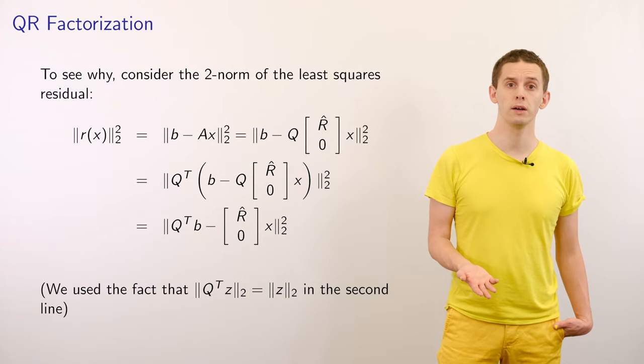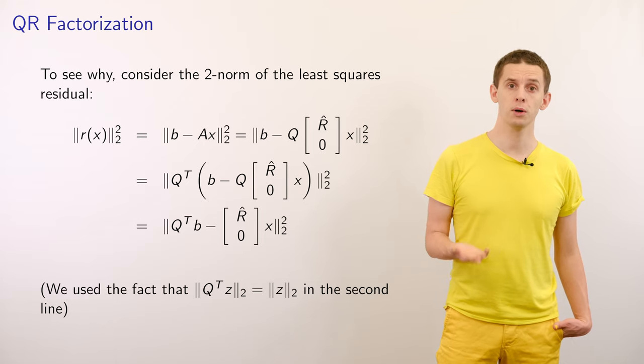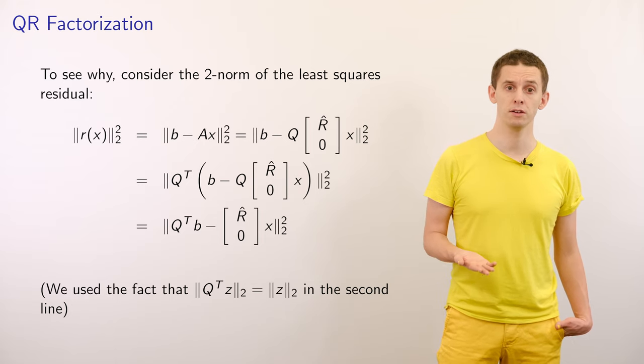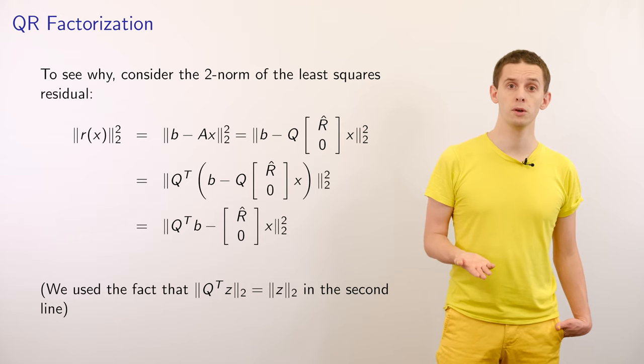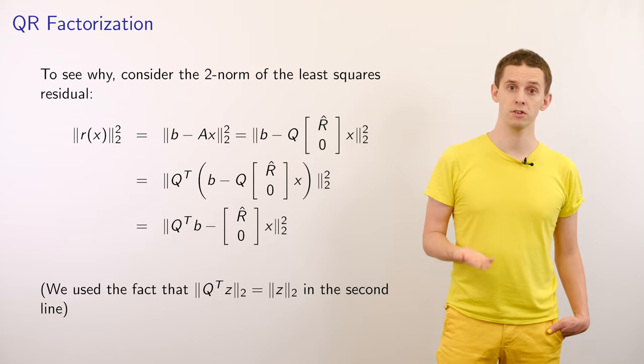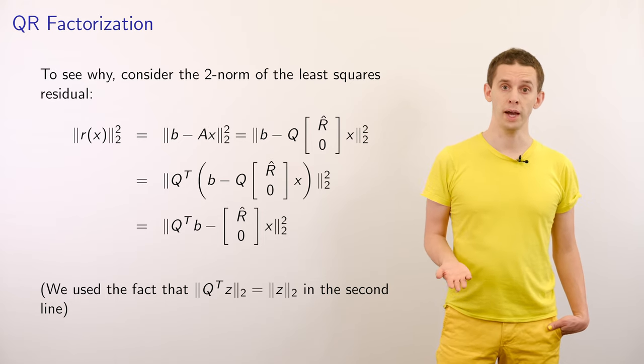To see why, let's look at the 2 norm squared of the linear least squares residual. This can be written as the 2 norm squared of B minus Ax. Using our QR factorization, we can write that as the 2 norm squared of B minus Q applied to our matrix R hat and 0 applied to X.